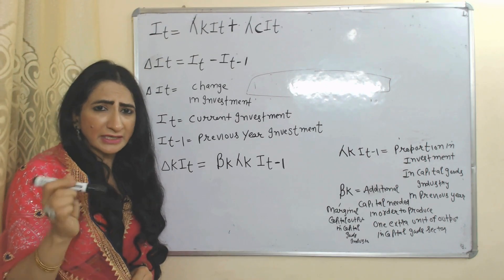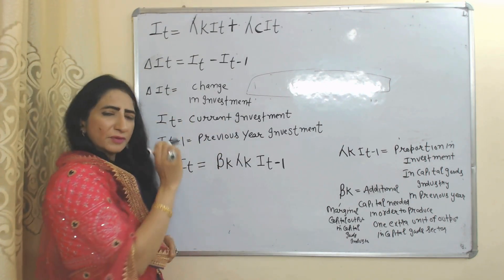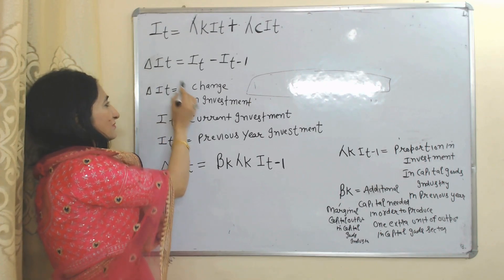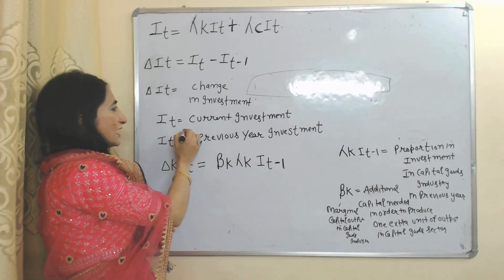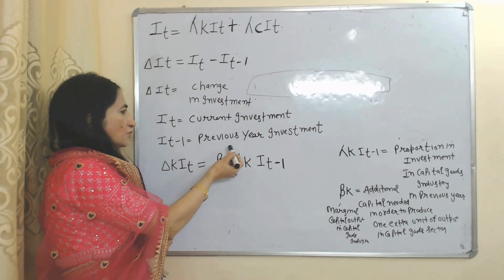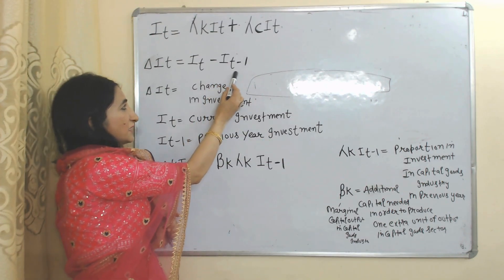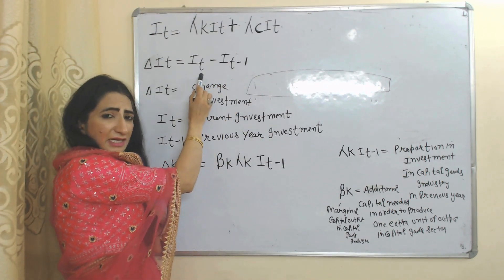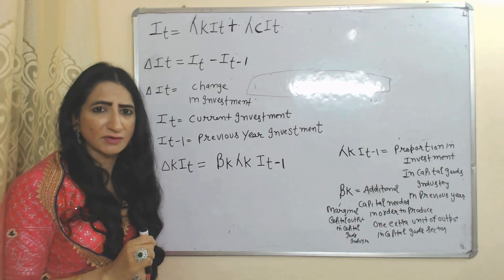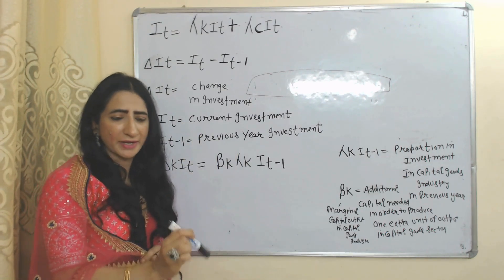Now we will see change in investment. Normally, we calculate change in investment by subtracting the previous year's investment from the current year's investment. Here, delta I_t means change in investment, I_t means current year investment, and I_{t-1} is previous year investment. When we subtract previous year investment from current year investment, it becomes equal to the change in investment. This is the standard way in economics to calculate change in investment.